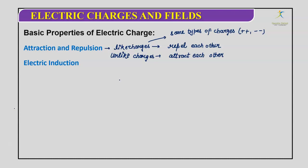Electric induction means when a charged body is brought near another uncharged body. If we take an uncharged body — meaning equal numbers of positive and negative charges — and place a charged body at a particular distance, it will attract the negative charges. If we then earth the uncharged body, the remaining charges flow to earth. When the earth connection is removed, the originally uncharged body becomes negatively charged. So by induction we can create a charge separation.